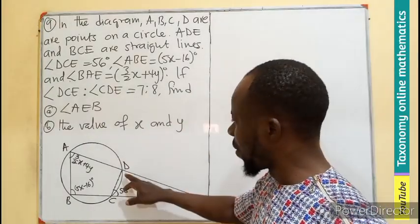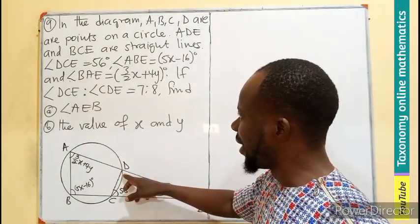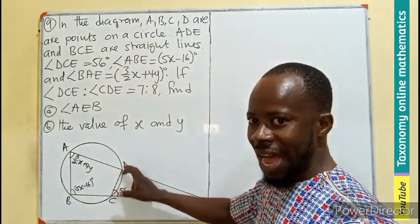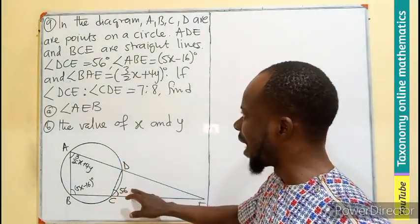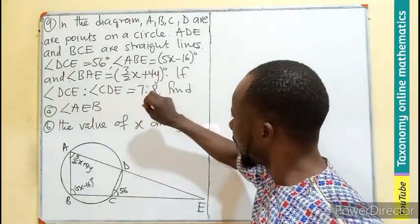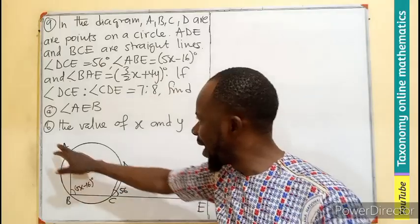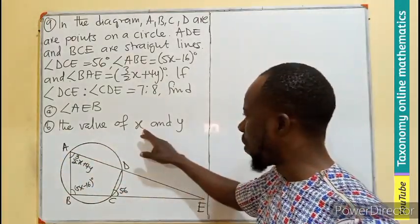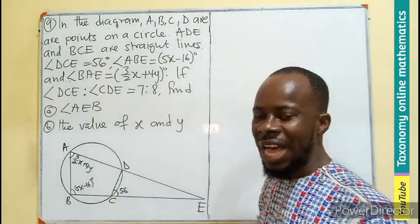So if the angle at the corner here, DCE, the ratio of that angle and this 56 angle is in the form 7 is to 8, we have to find the angle AEB and find the value of x and y.